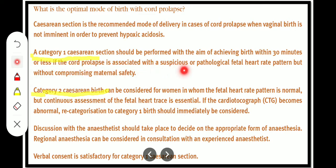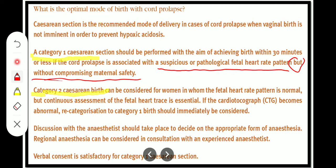If there is a suspicious or pathological CTG but no issue of maternal safety, we can go for category 1 cesarean section. Category 2 cesarean section can be considered for women in whom the fetal heart rate pattern is normal, but continuous assessment of fetal heart rate is also essential. If CTG becomes abnormal, recategorisation to category 1 birth should be immediately considered. Discussion with anaesthetists should take place to decide on the appropriate form of anaesthesia; regional anaesthesia should be considered in consultation with an experienced anaesthetist.